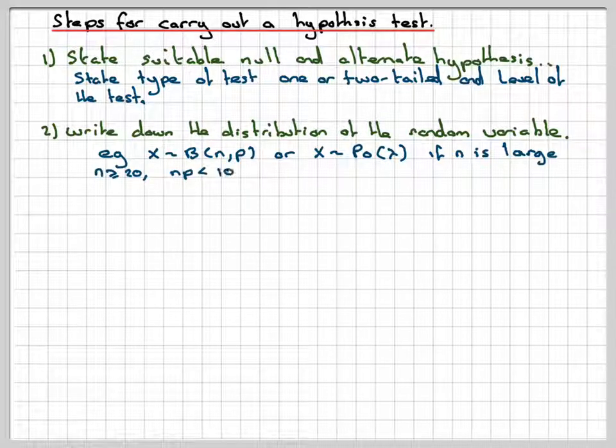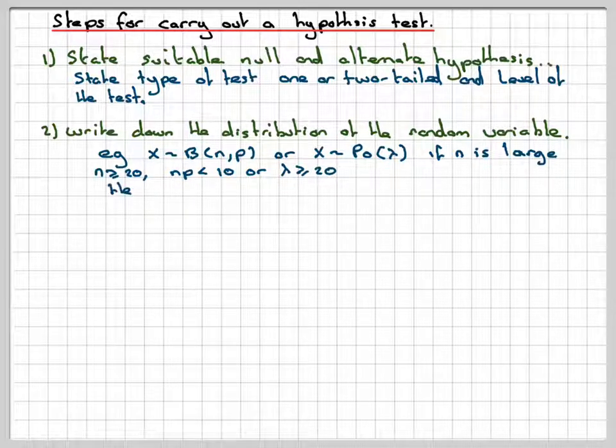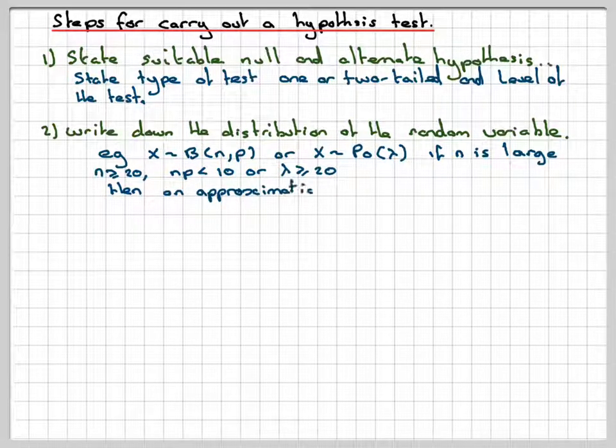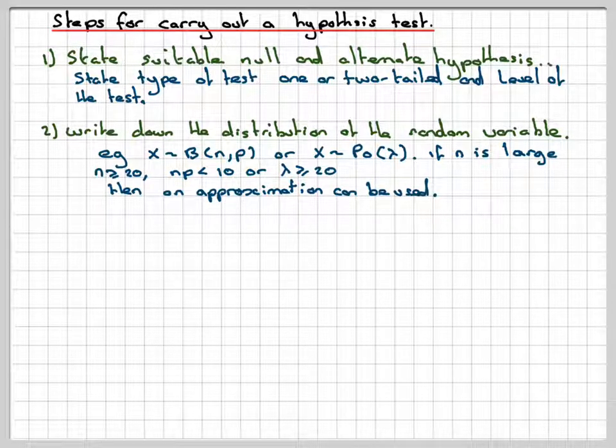If n is large, i.e. n is greater than 20, or np is less than 10, or lambda is greater than 20, then an approximation can be used, and the approximation normally used is the normal distribution.